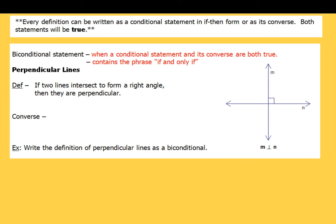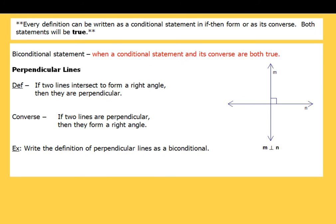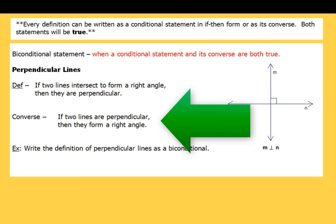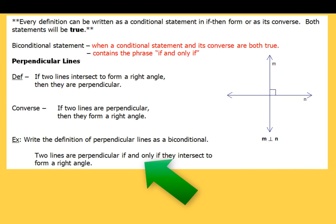Let's take a look at the definition of perpendicular lines. 'If two lines intersect to form a right angle, then they are perpendicular.' The converse: 'if two lines are perpendicular, then they form a right angle' — that's true too. So we write the biconditional: 'two lines are perpendicular if and only if they intersect to form a right angle.'